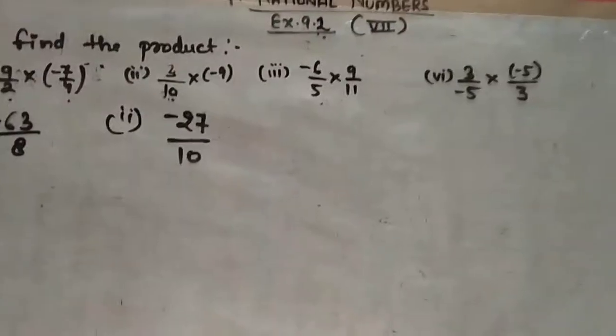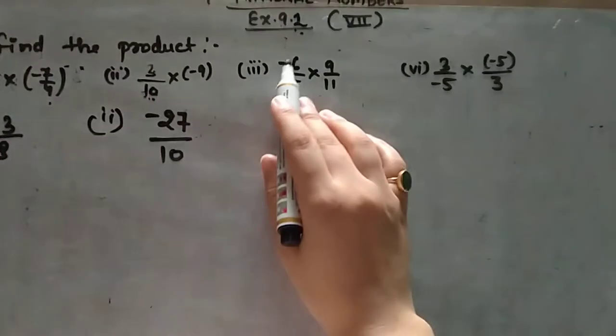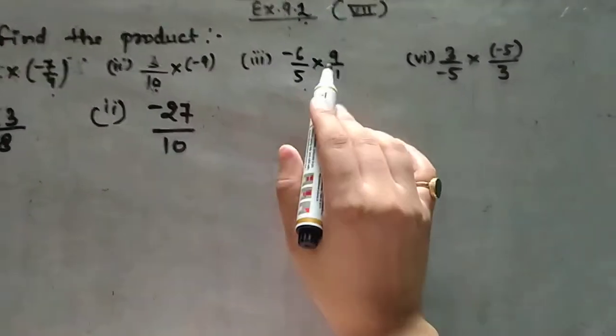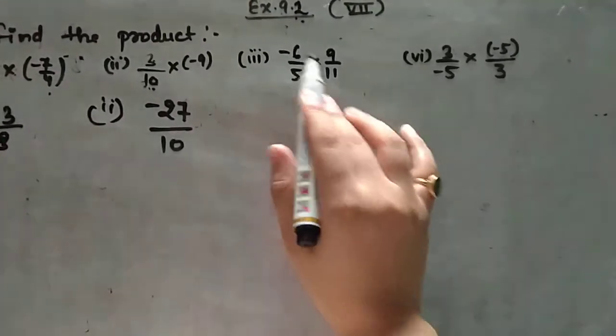Moving to the third part: minus 6 upon 5 multiplied by 9 upon 11. No numerator with denominator cancellation is possible here.